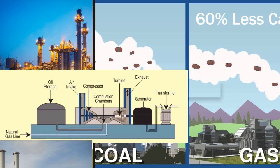Gas power plants are known for their high thermal efficiency, which is the ratio of electrical output to the heat energy input. Combined cycle power plants can achieve even higher efficiencies by utilizing the waste heat from the gas turbine to produce steam and drive a steam turbine.